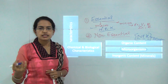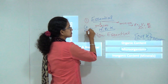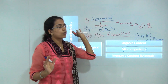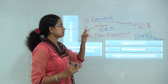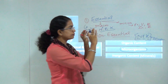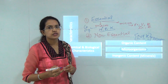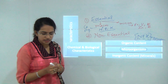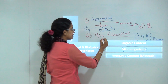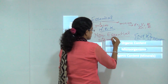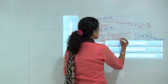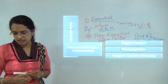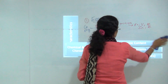Besides NPK, other macronutrients include calcium and magnesium. All these elements — whether required in large or small quantity — are essential nutrients for the soil or plant to grow. Besides these, there are some non-essential nutrients like sodium and silicon that are not required by the plant to grow.